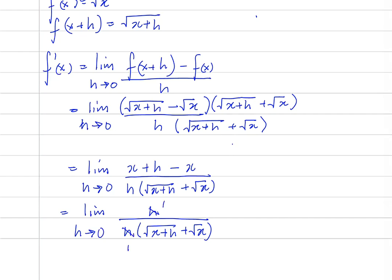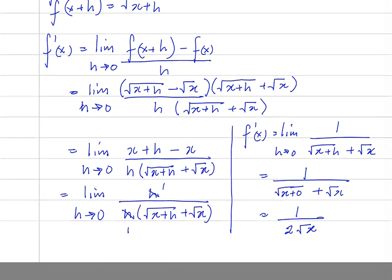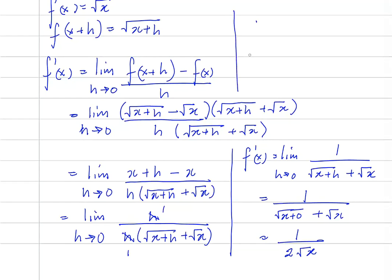So we're going to have f prime of x is equal to the limit as h approaches 0 of 1 over root x plus h plus root x. So, using direct substitution, this would be equal to 1 over root x plus root x, which is 2 root x. So if f of x is equal to the root of x, f prime of x is equal to 1 over 2 times the root of x.